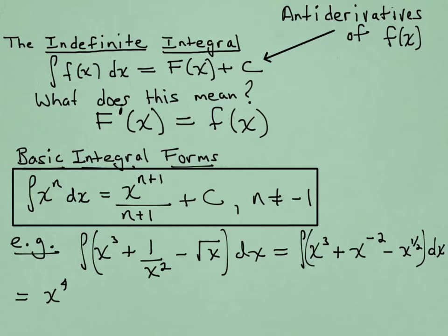So x cubed, its antiderivative will go up to degree 4 and we divide by 4. x to the minus 2, we go up a degree to negative 1 and we divide by negative 1. And the other power is minus 1 half, so minus x to the 1 more, that would be 3 halves now, divide by 3 halves, plus c.